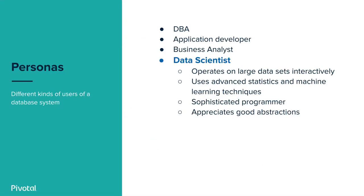Throughout this experience I've come to think of different personas, different kinds of users who might be using a database system. One such user might be a database administrator, an application developer, or a business analyst. In this presentation I want to focus on the abstractions that are useful and necessary for a particular type of user — data scientists. A data scientist typically operates on large data sets interactively.